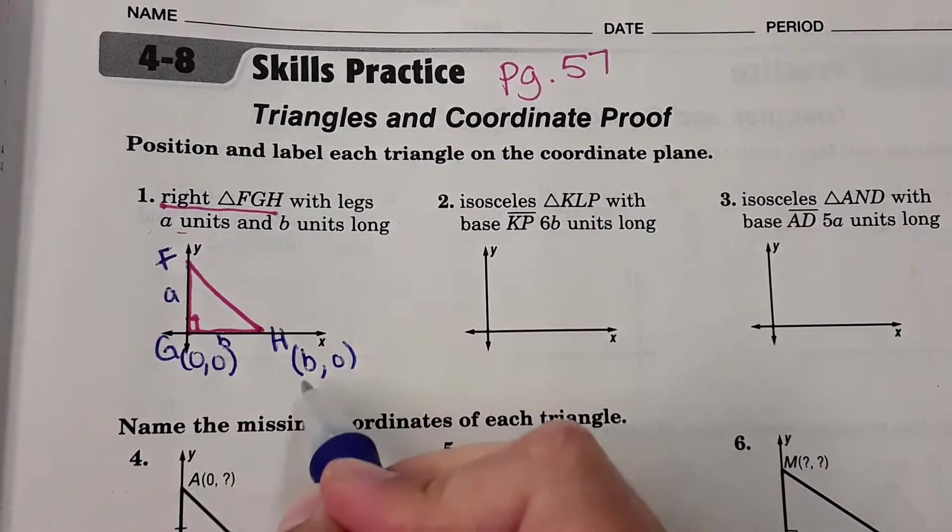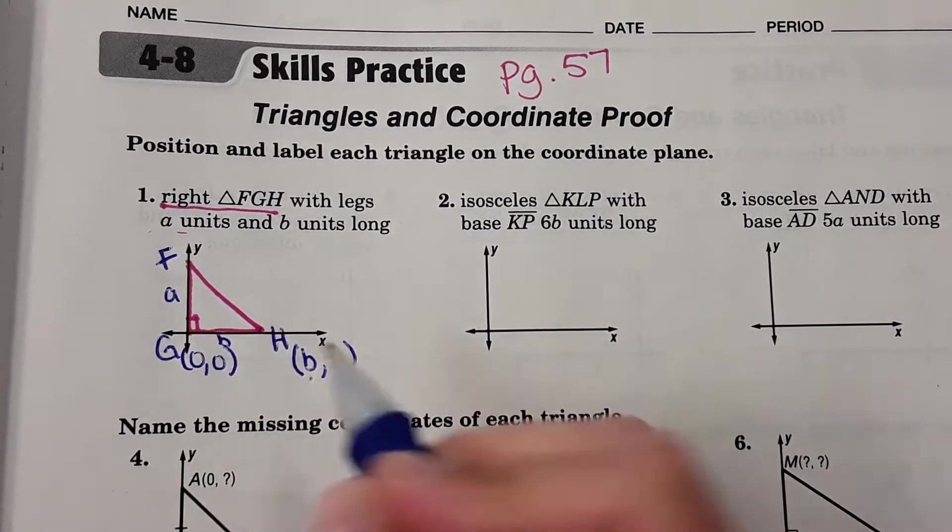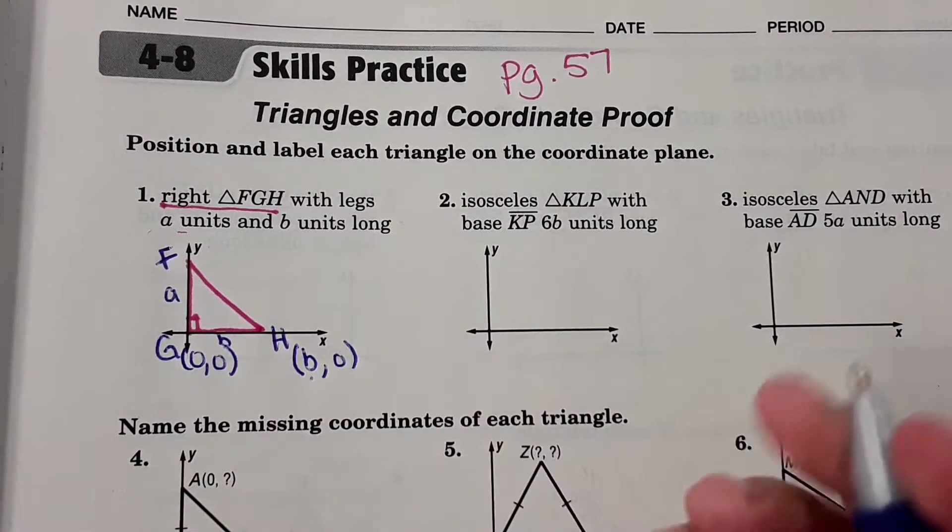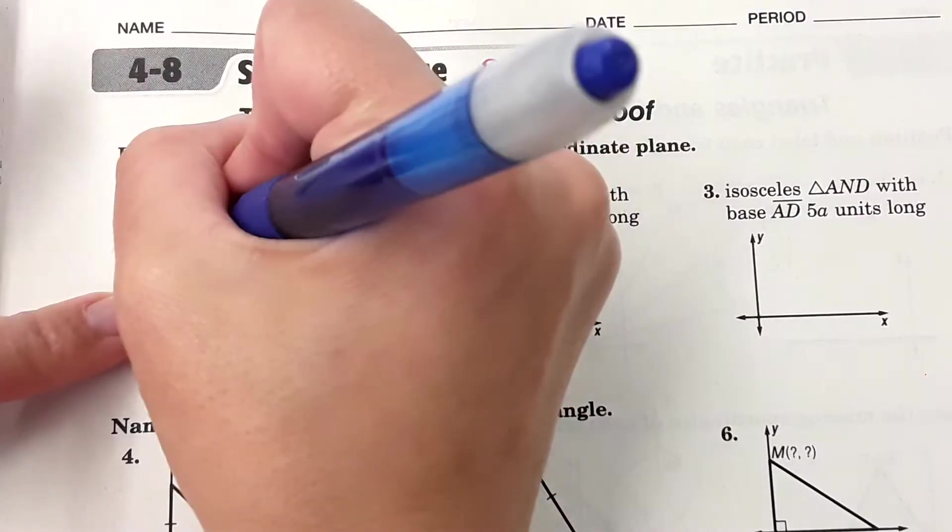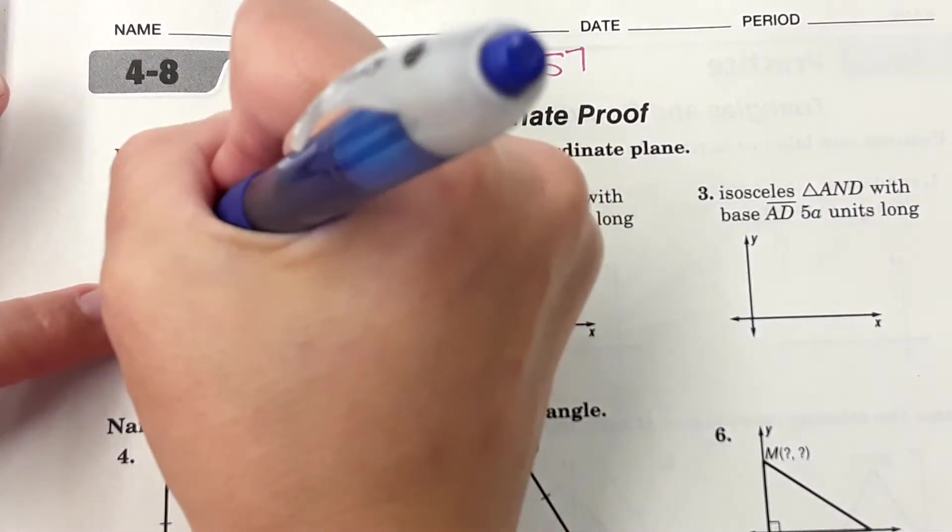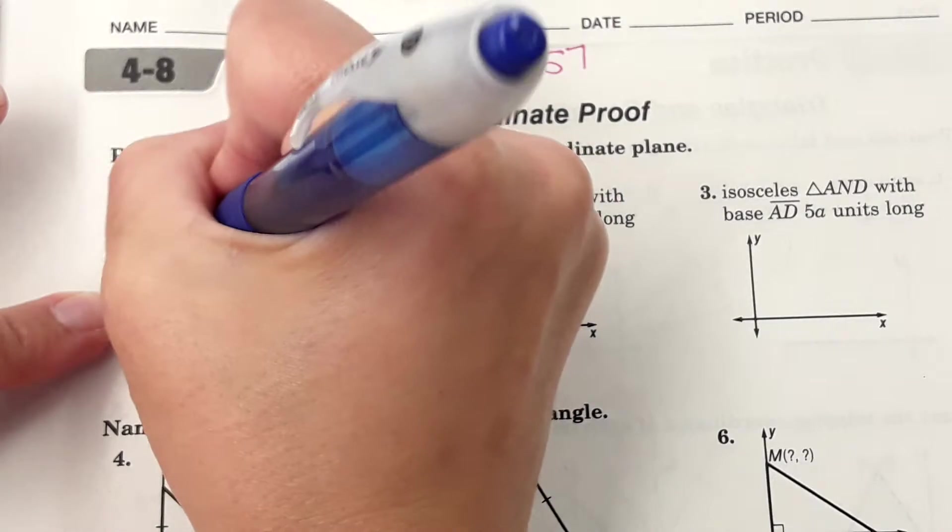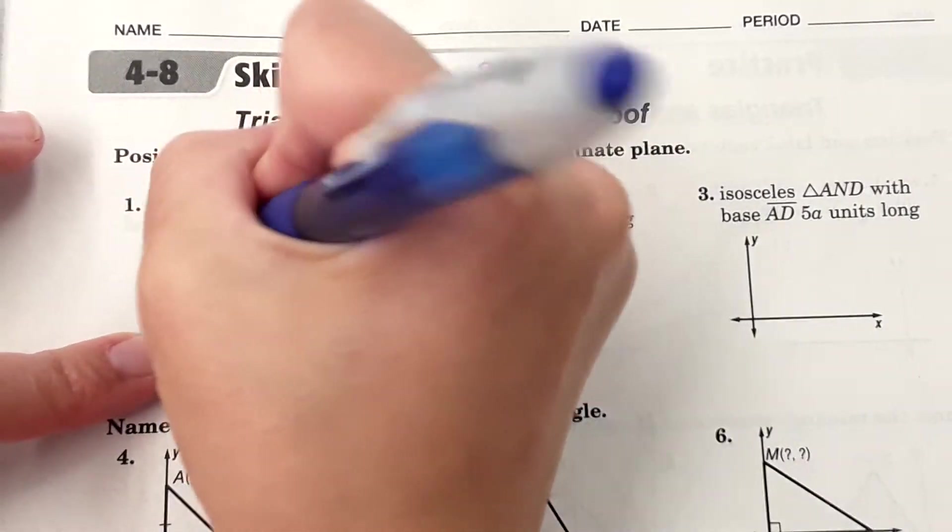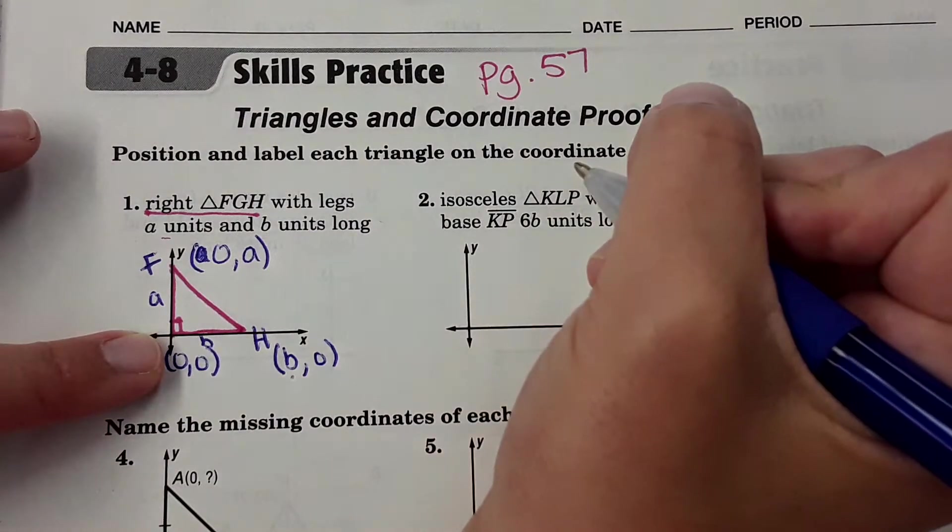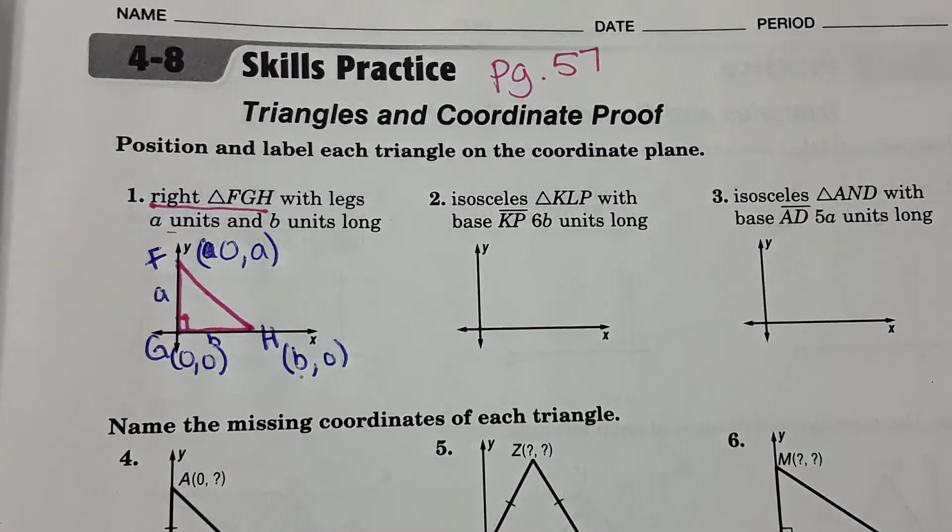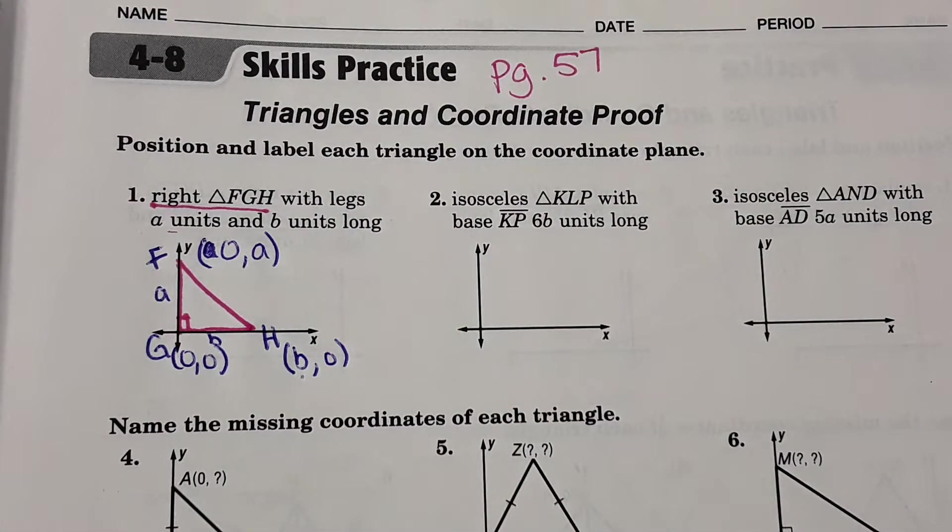And then it says that the legs are A units long and B units long. So here for point H it would be B zero, because this is B units long. The first number would be B. You go over B units and then up zero. And then for F, you would go over zero units and up A units. Zero A.